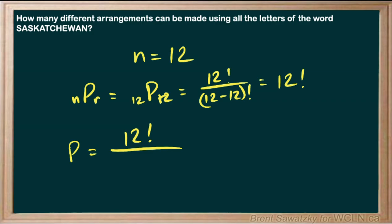We have three A's and two S's. To eliminate those duplicates, we divide by 3 factorial for the A's and 2 factorial for the S's.